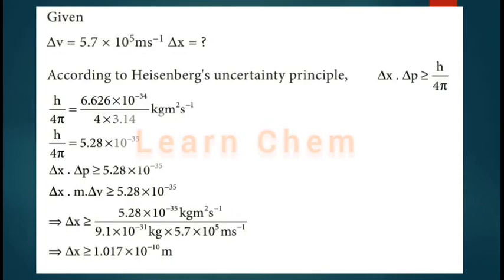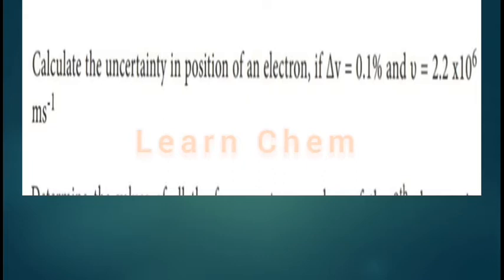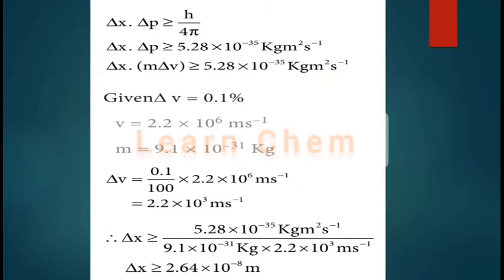The next problem again asks for the uncertainty in position of an electron. The velocity is 2.2×10⁶ m/s and there is 0.1% uncertainty in the velocity. We need to find the uncertainty in velocity first.